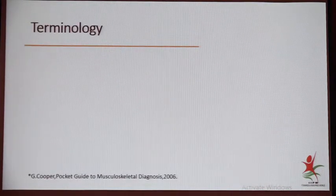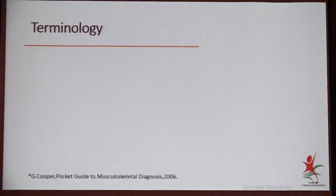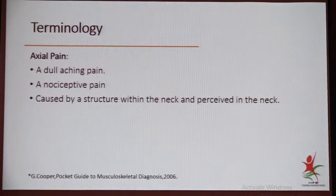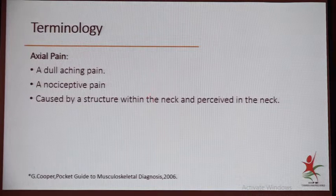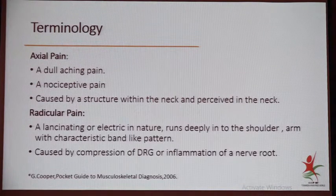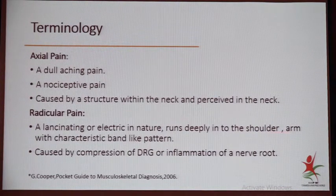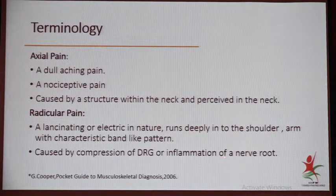Before proceeding, we need to know certain terminology so we can understand what the patient is saying and what the clinical symptoms mean. What is axial pain? It is a dull, aching nociceptive pain caused by structures within the neck and perceived in the neck itself. Radicular pain is a lancinating, electric shock-like pain that runs deeply into the shoulder, arm, and up to the fingers, caused by compression or inflammation of the nerve or DRG.